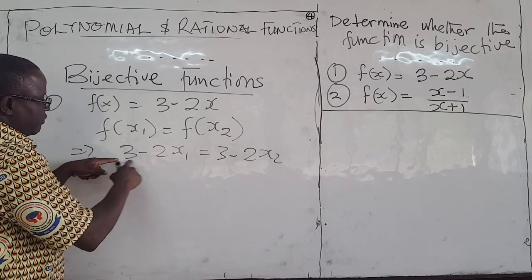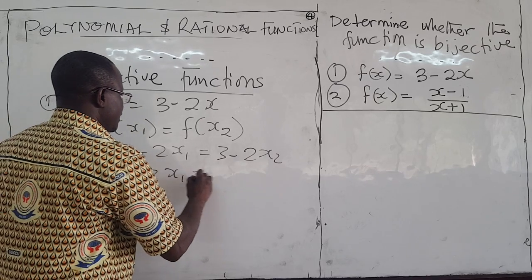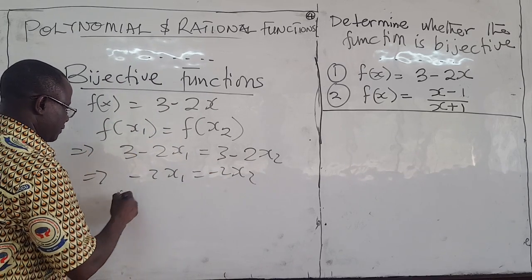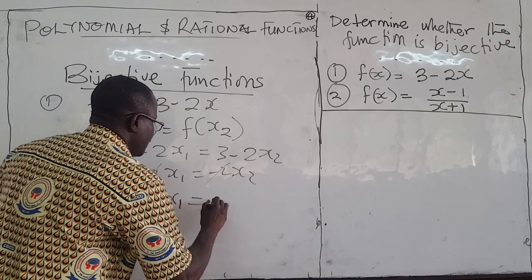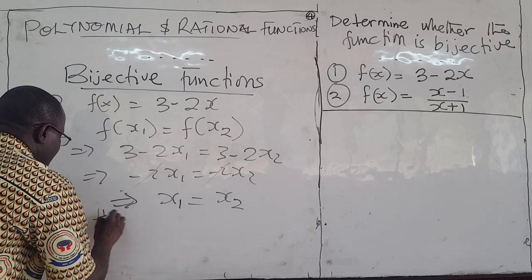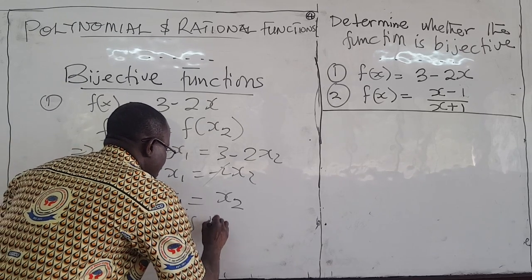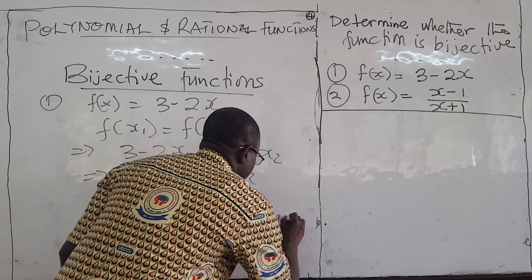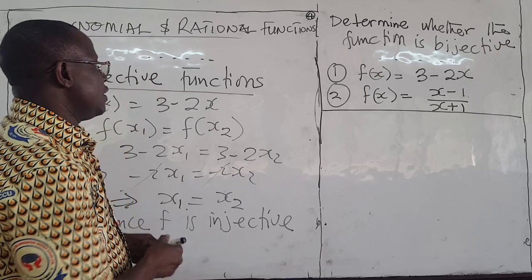Then f(x1) = f(x2) implies that 3 minus 2x1 equals 3 minus 2x2. The 3s cancel out, so negative 2x1 equals negative 2x2. The negative 2s cancel out, so this implies that x1 equals x2. Hence, f is injective — it is one-to-one.